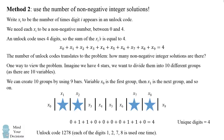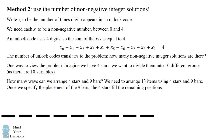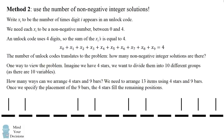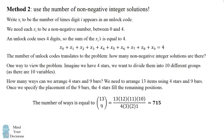The stars and bars representation captures all non-negative solutions to the equation and thus counts all unlock codes. We have a total of 13 items — 4 stars and 9 bars. Once we specify the placement of the 9 bars, the 4 stars fill the remaining positions. So we start with 13 spots and place 9 bars, leaving exactly 4 spots for the stars.